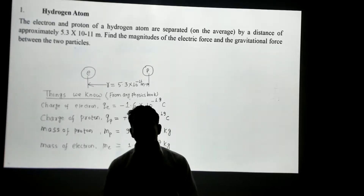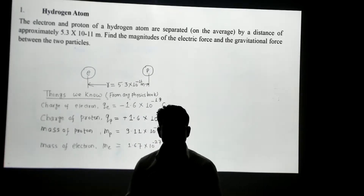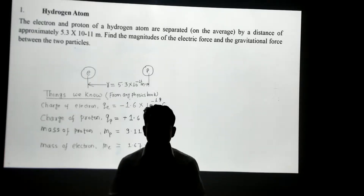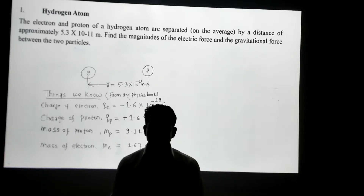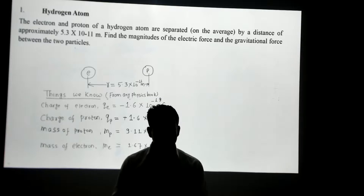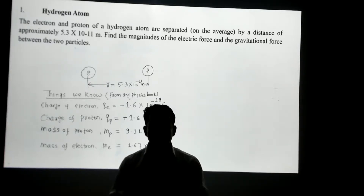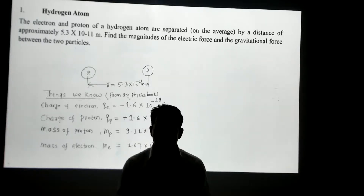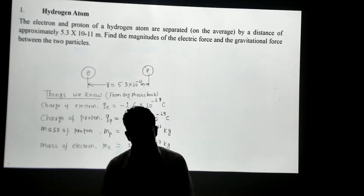Welcome to the world of physics problems. In this video we're going to talk about the Coulomb force and the gravitational force between an electron and a proton in a hydrogen atom. We're going to find out the electrical force or Coulomb force between the electron and proton, calculate the gravitational force, and finally compare the strength or magnitude of the electrical force with the gravitational force.